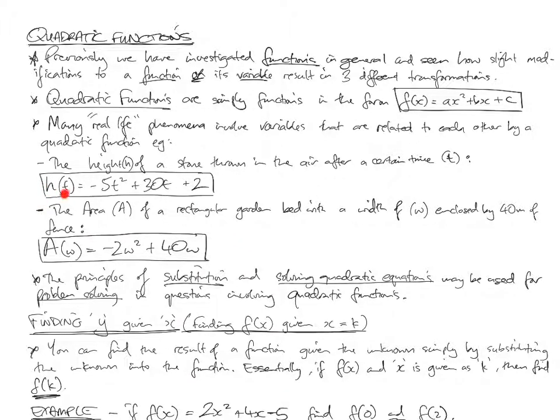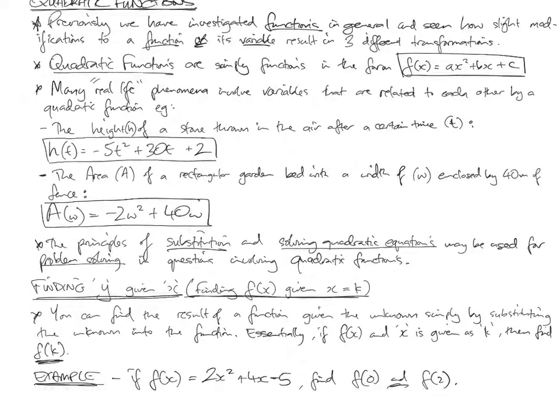So h, the height over a given time, is going to be negative 5t squared plus 30t plus 2. That's not the equation or the function of the height of a stone in general. That's for this particular stone being thrown. But that's just an example of how a real-life phenomena could be represented by a quadratic function.